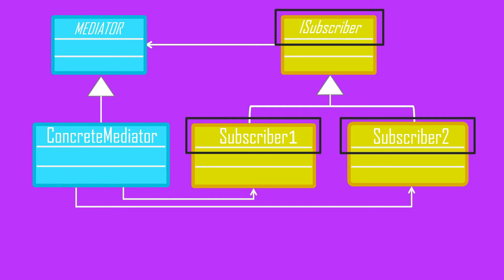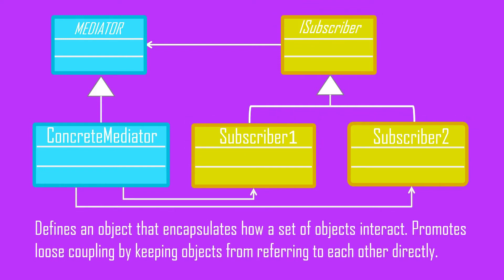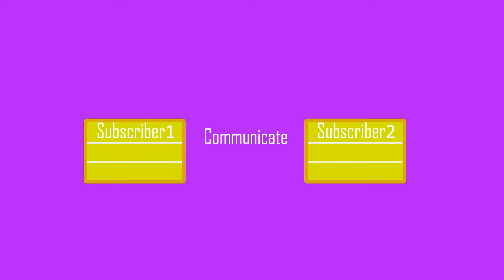By the end of this video you will be able to implement it in your real-time projects. The definition says: defines an object that encapsulates how a set of objects interact, and promotes loose coupling by keeping the objects from referring to each other directly. In short, the mediator pattern encapsulates how objects communicate with each other without referring to each other directly.